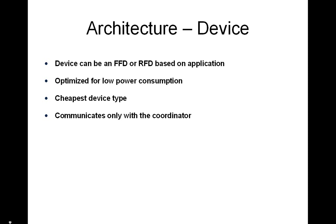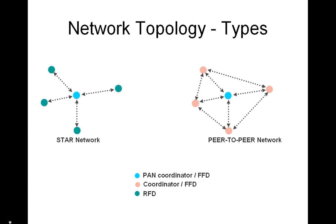The most basic and least complex component in a WPAN network is the device. Characteristics of a device are as follows: it can be an RFD or FFD based on the application, it is optimized for low power consumption, it is the cheapest device type in the network, and it communicates only with the coordinator or PAN coordinator. I hope everyone has understood the basic components required to form a Zigbee network. In the next slide, I will show the network topologies supported by Zigbee.